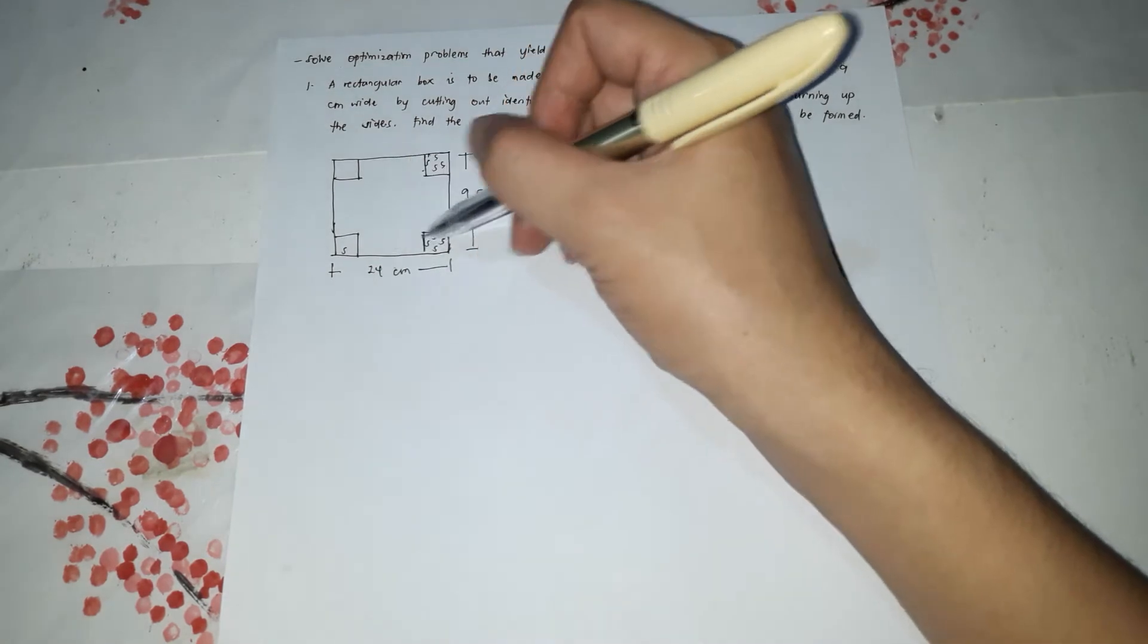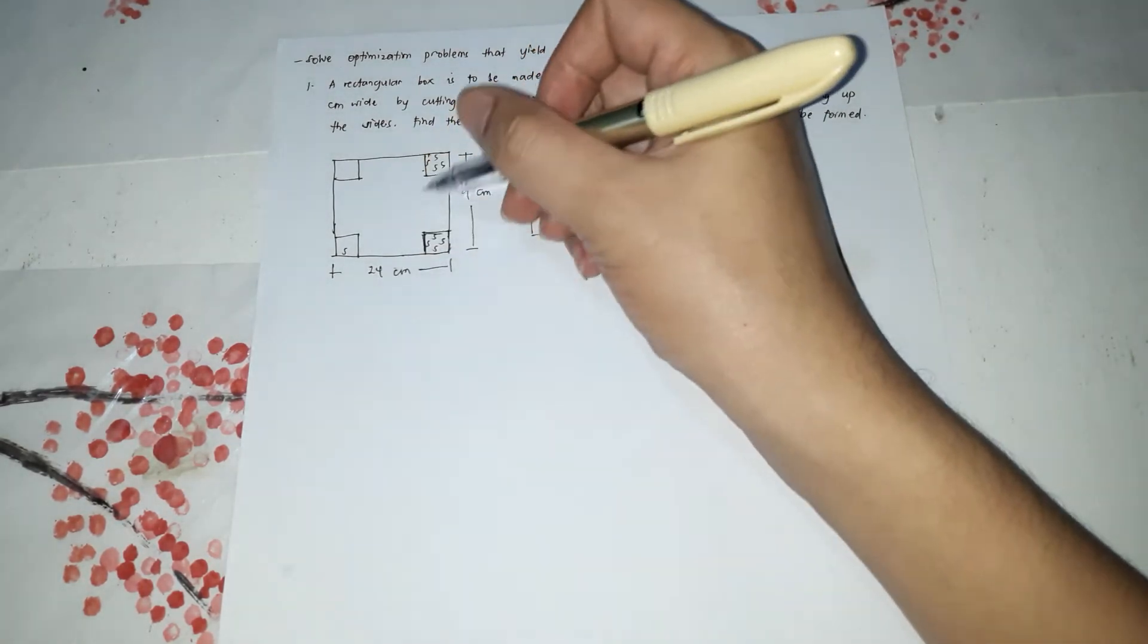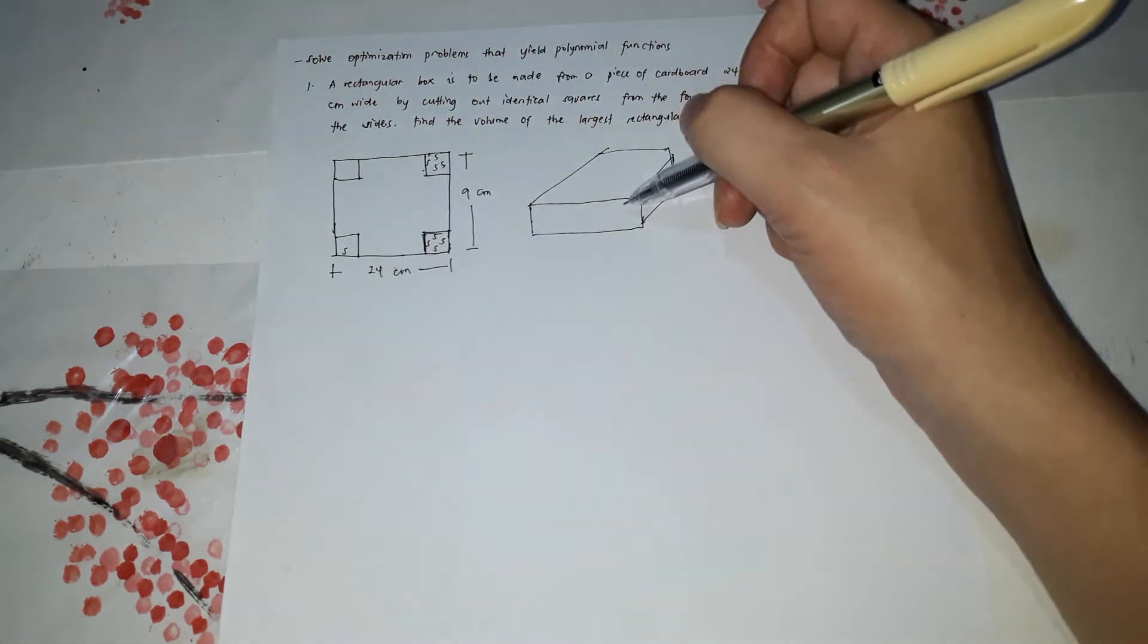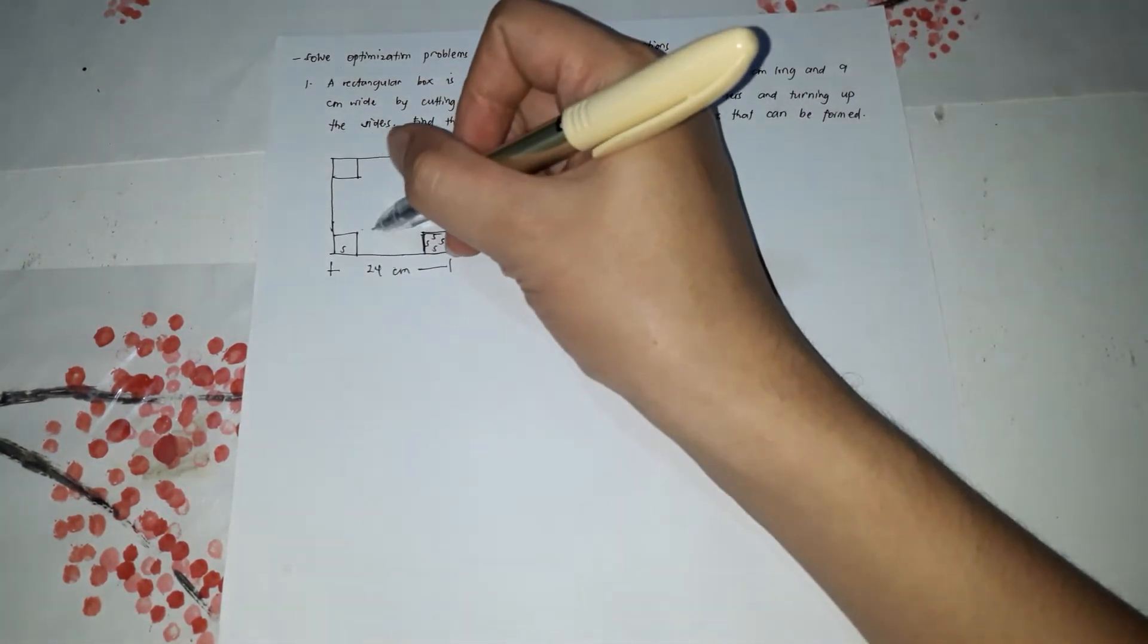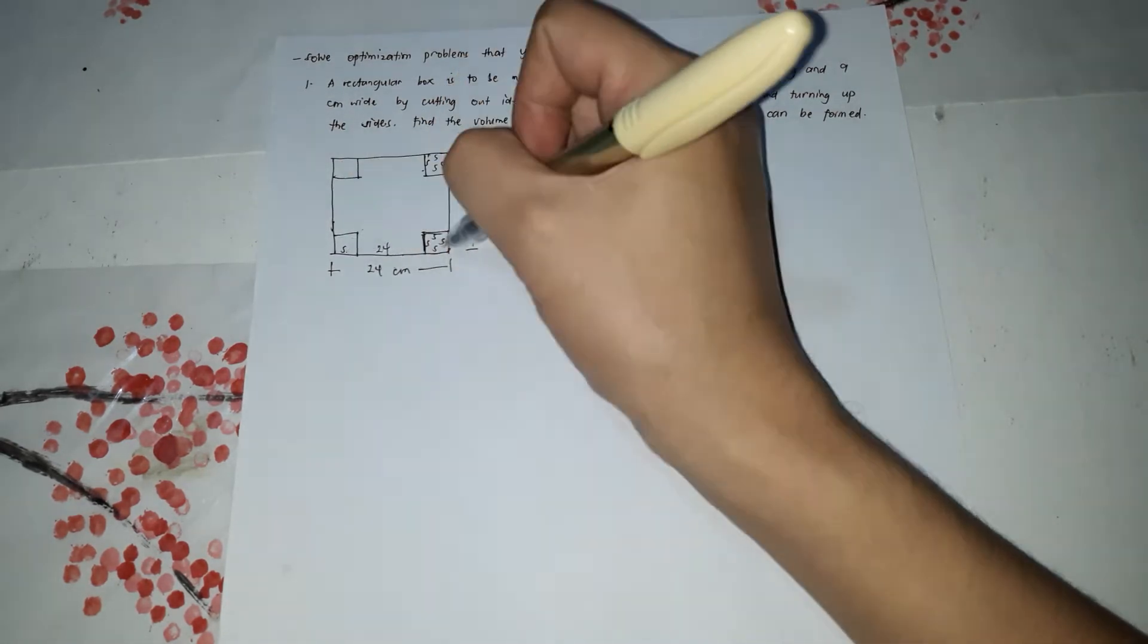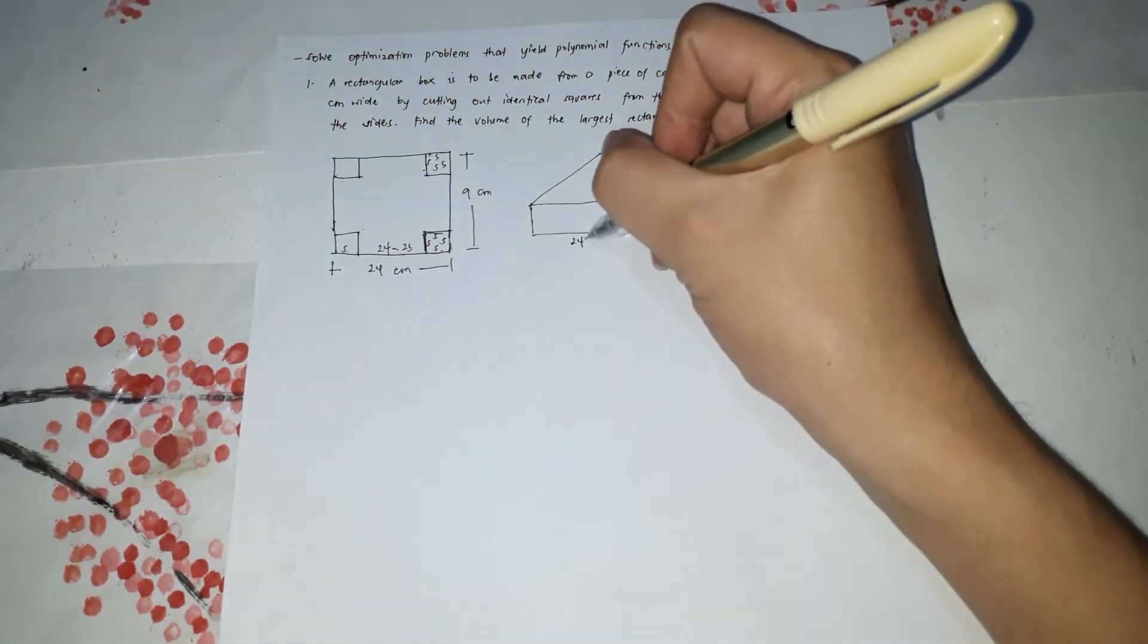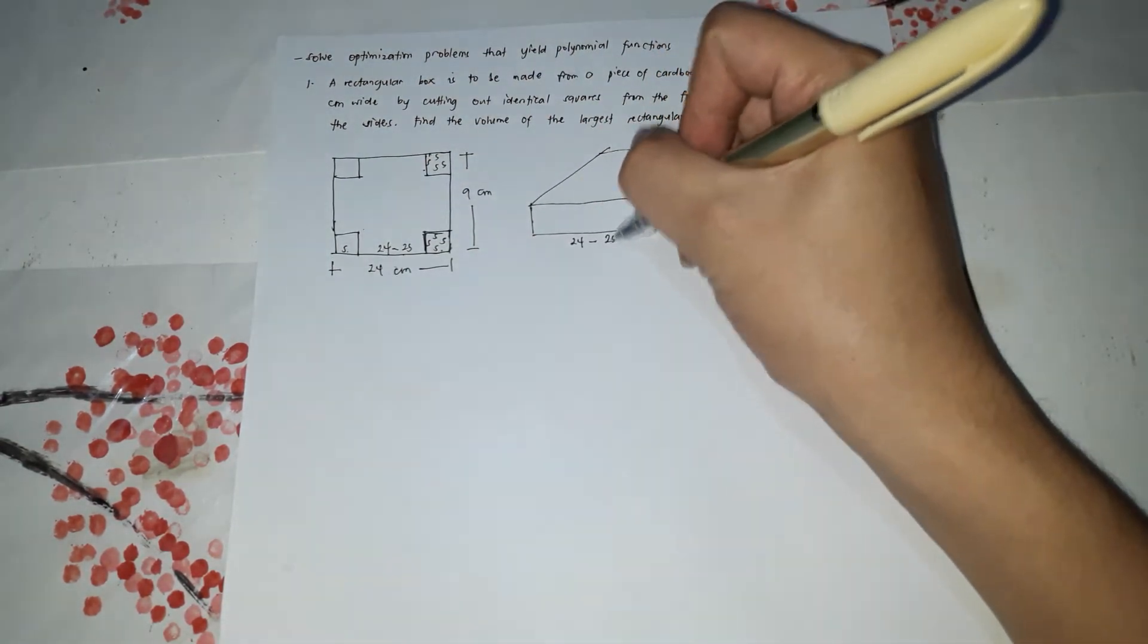So this is the length. If you're going to cut these pieces in here and then you're going to flip this, flip, flip, flip. So the height here is 24 cm. Subtract two S. So that would be the length in here, 24 minus 2S.